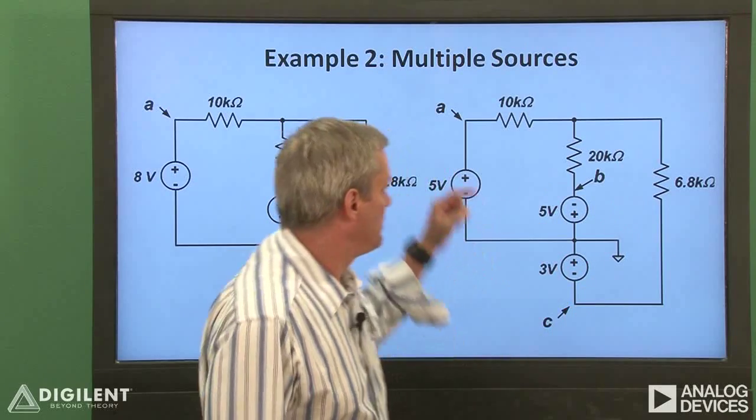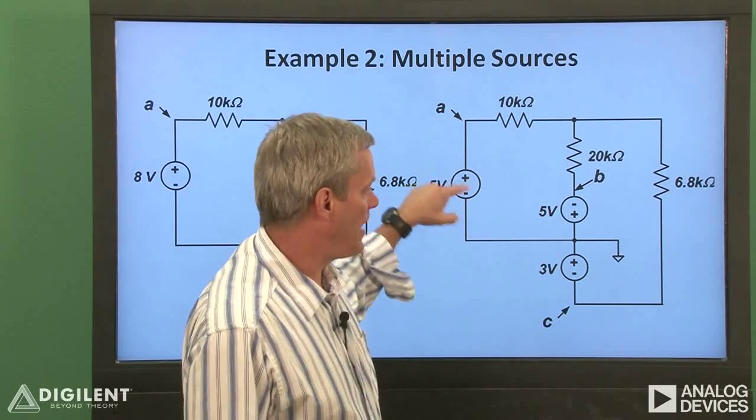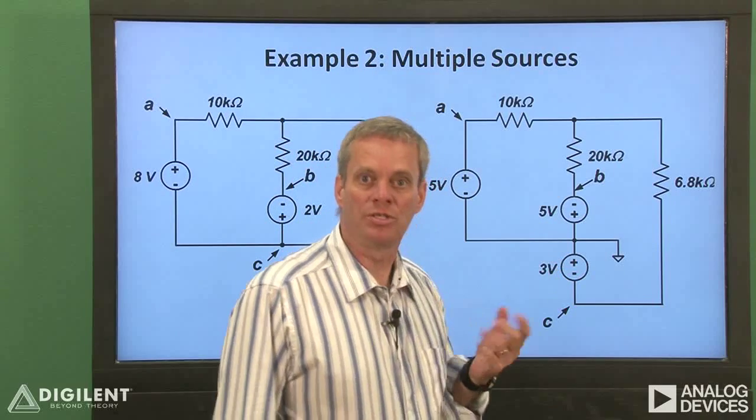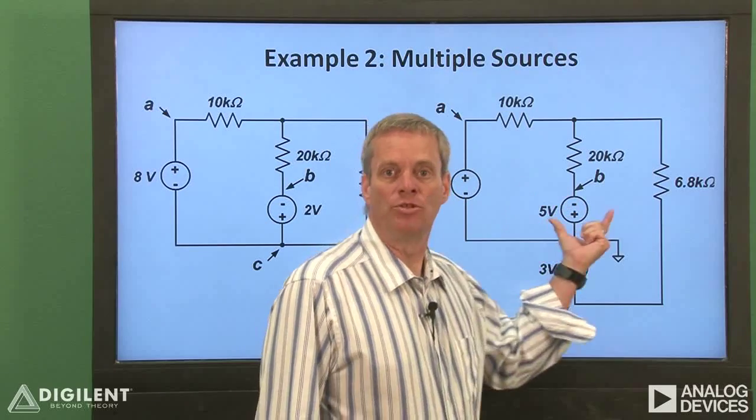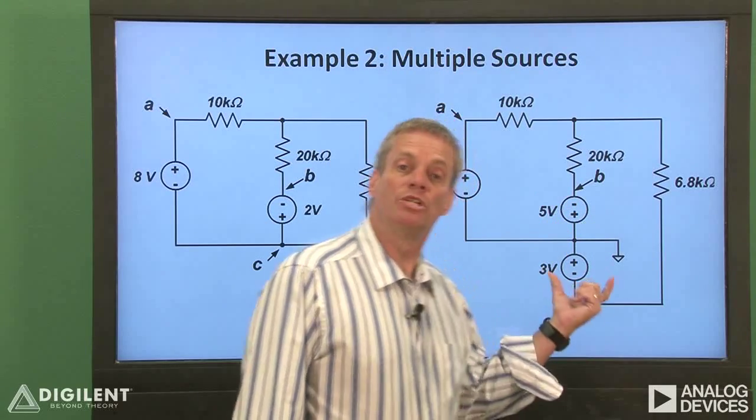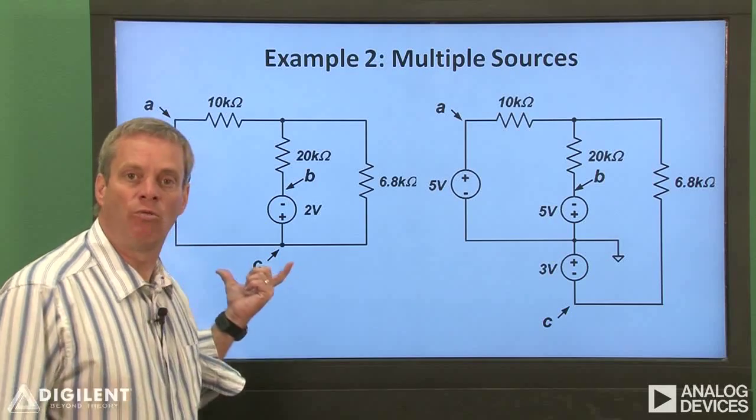Now, in this circuit, the voltage difference VAC is 5 volts plus 3 volts, which is 8 volts, and VBC is 3 volts minus 5 volts, which is our minus 2 volts, which is exactly what our original circuit wants.